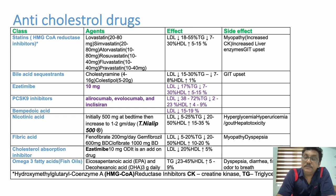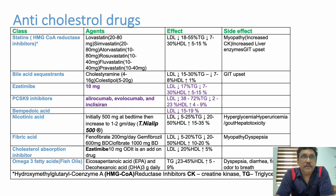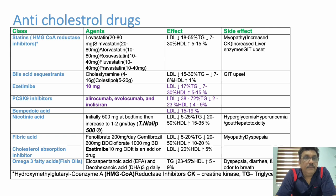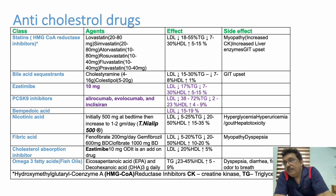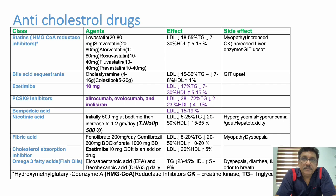In routine practice, atorvastatin 10–20 mg in the evening or rosuvastatin 10 mg at night are the two most commonly used drugs. In a patient with an acute event such as acute myocardial infarction or acute stroke, the dose is very high — atorvastatin 80 mg or rosuvastatin 40 mg — then stepped down to 40 mg atorvastatin, then 20 mg atorvastatin or rosuvastatin 20 mg to 10 mg.